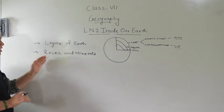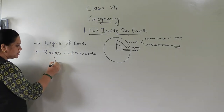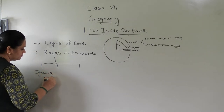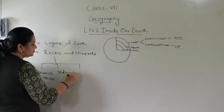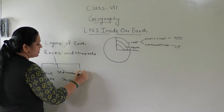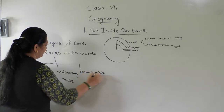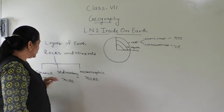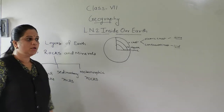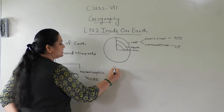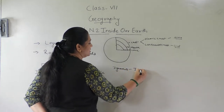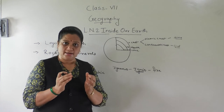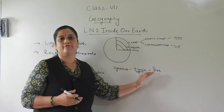Now let us study about rocks and minerals. Rocks are of three types: the first one is igneous rocks, the second one is sedimentary rocks, and the third one is metamorphic rocks. Let us study about each one in detail, starting with igneous rocks.